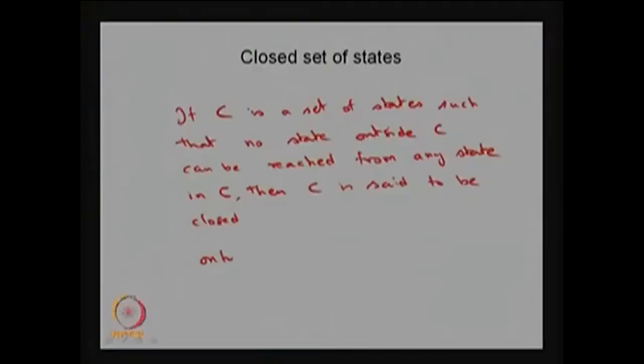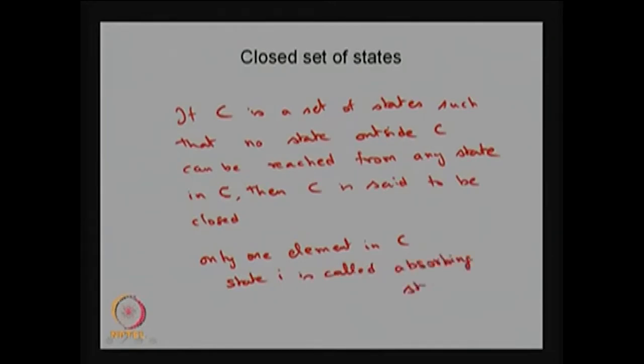There is a possibility that a set can have more than one element or only one element. If any closed communicating class has only one element — that means you cannot include one more state to make it a closed or communicating class — then that state is called an absorbing state. If there is only one element in capital C, then state i is called an absorbing state.